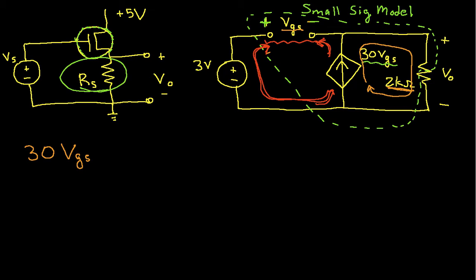So basically, what I know is that all of the current that flows through this dependent source flows around this loop through this 2k ohm resistor. So this tells me then that the current, which again is 30 times VGS, times the resistance, 2k ohms, is equal to my output voltage. So this is good. This is useful information.